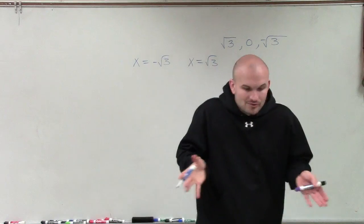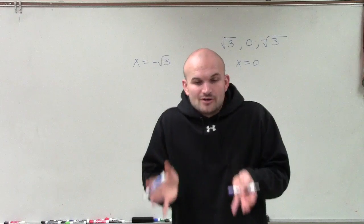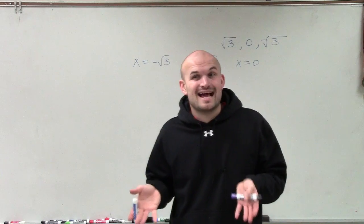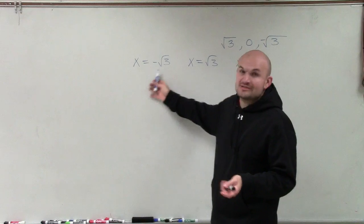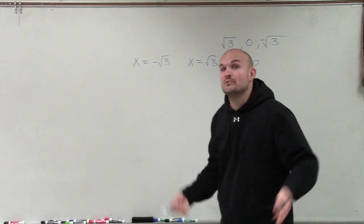All right, because remember, x equals these zeroes. This is where these zeroes are where the graph crosses or touches our x-axis. So these are the values that x is equal to for this polynomial that we need to figure out.